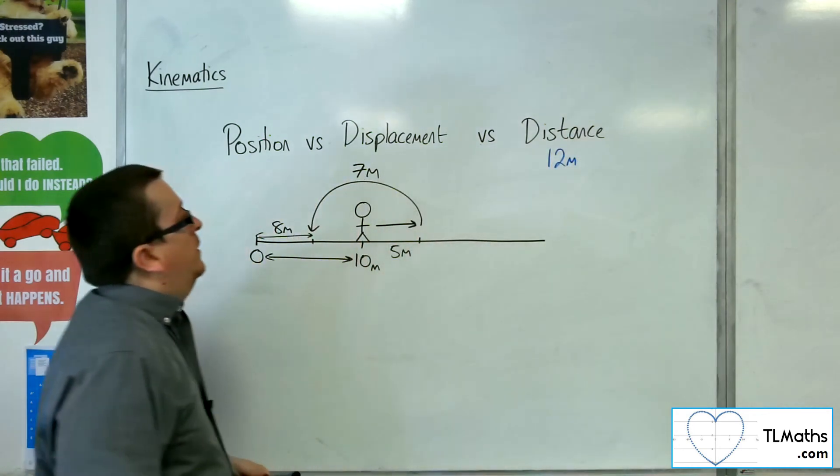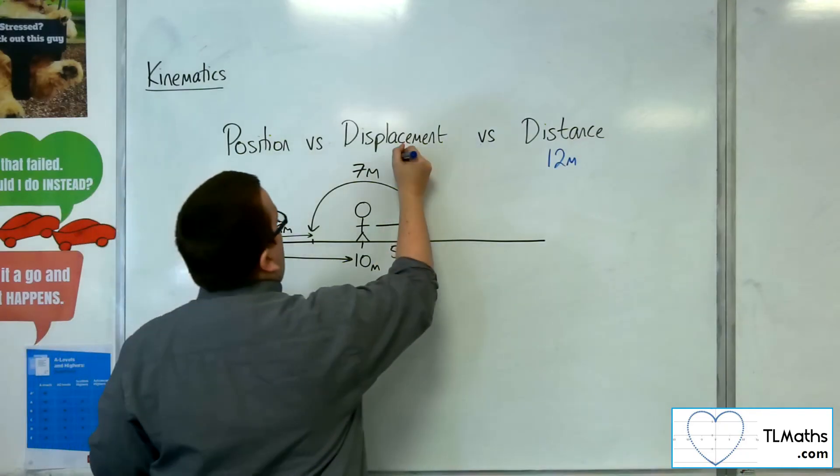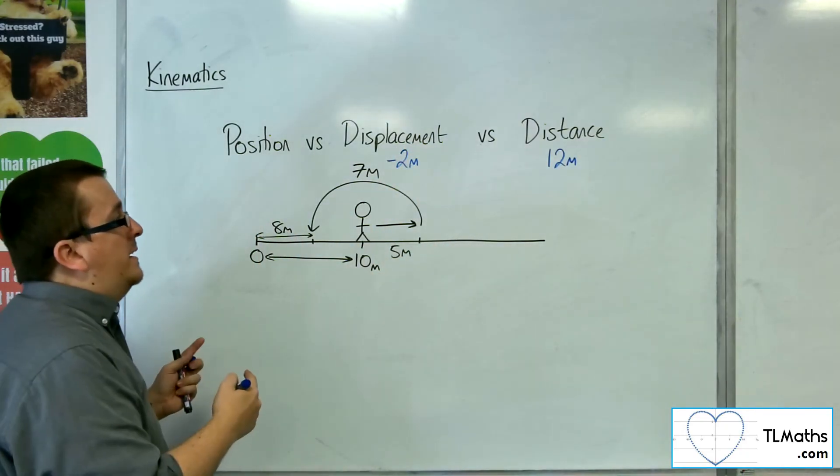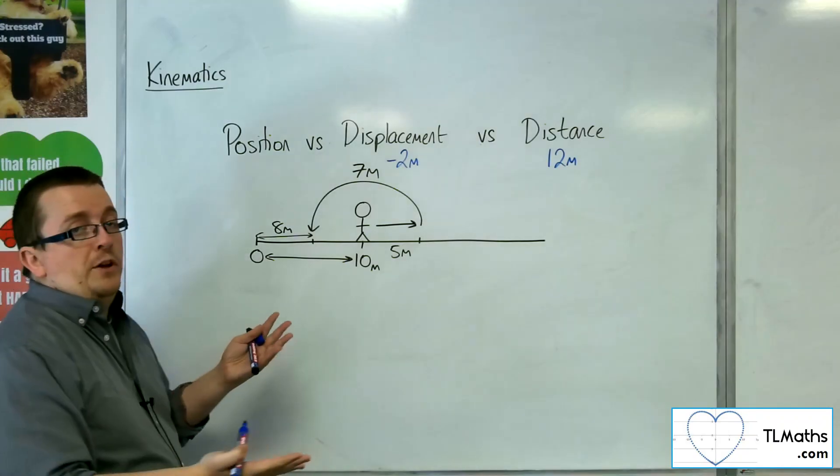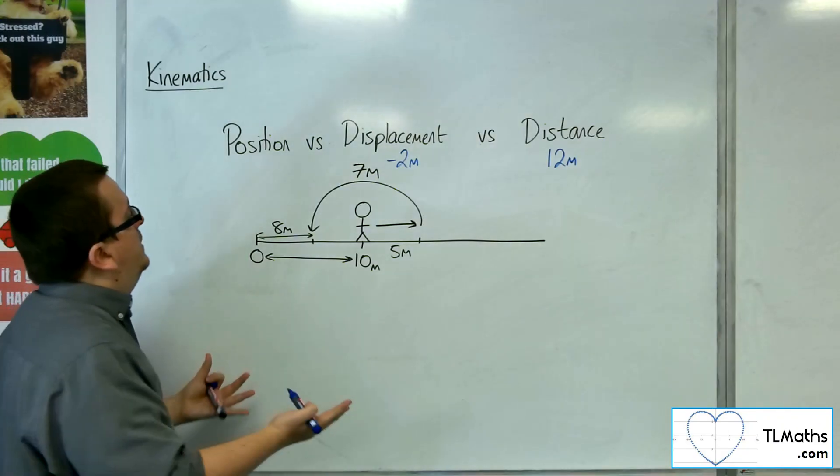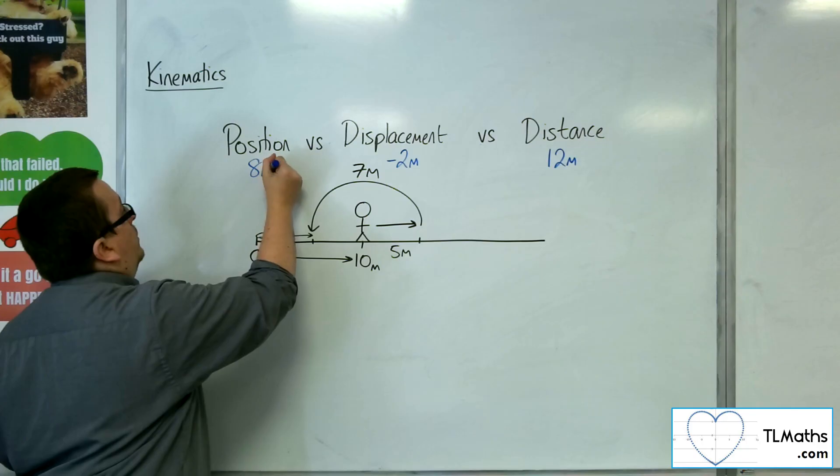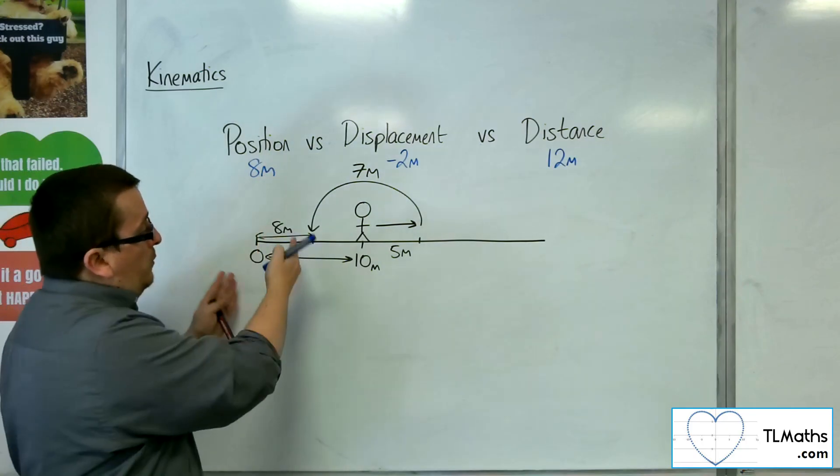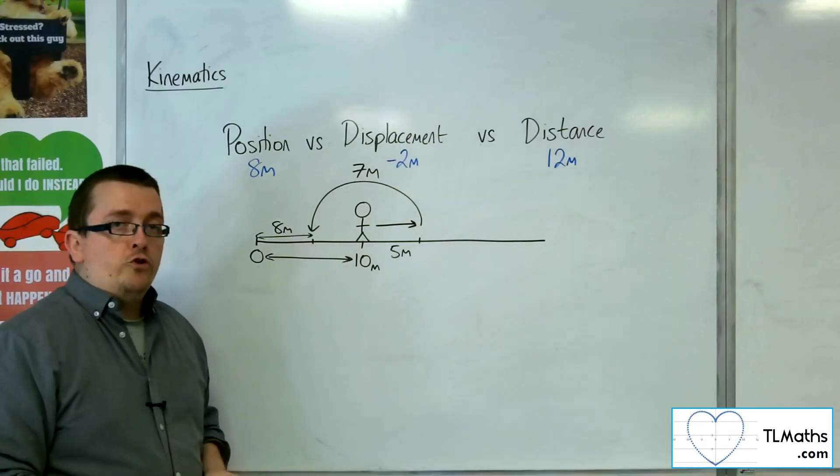So, the displacement could be measured as minus 2 metres, because we're 2 metres back. The distance is 12 metres because it's the total distance that has been covered. And the position could be written as 8 metres because it's 8 metres where they finally ended up away from the origin.